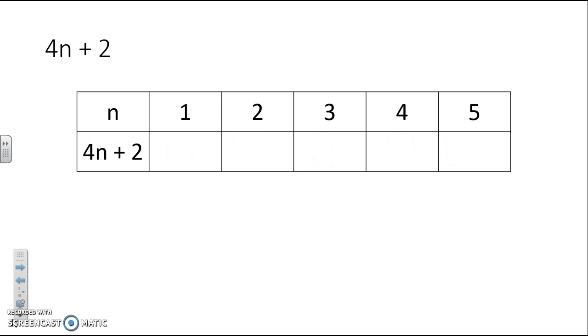Here's a more complicated example where we've got to do more than one thing. This is saying we need to do 4 times n and then add 2. So for the first one, when n is 1, we do 4 times 1, which is 4, plus 2. So our answer is 6. Pause the video and have a go at this one.